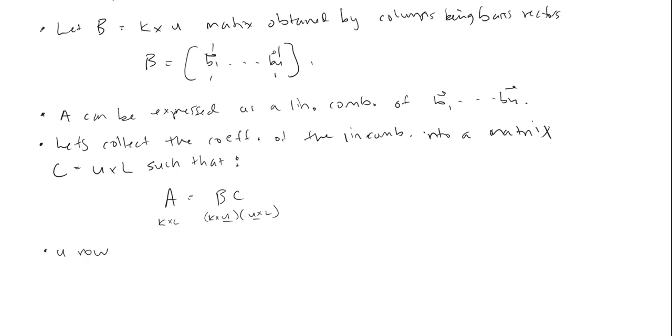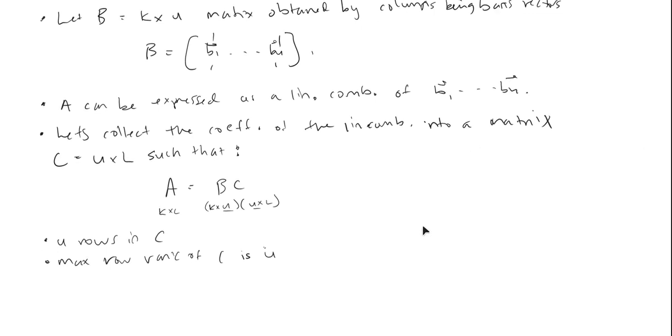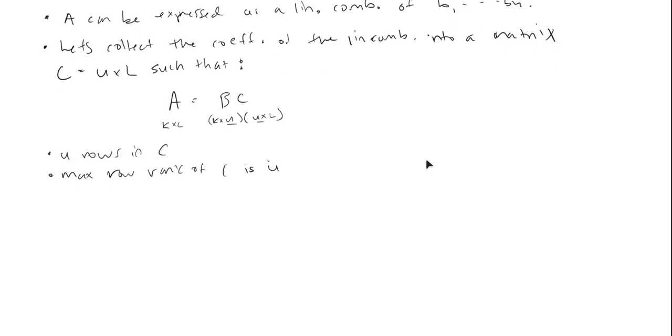Now note that there are U rows in C. And so the max row rank of C is U. It's got U amount of rows, and so you cannot have no more rank than U, even if all the row vectors are linearly independent, that's the max rank. And so we're writing A as B times C. So we can say that the rows of A are linear combinations of the rows of C due to this matrix multiplication.